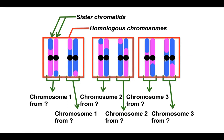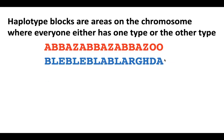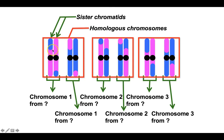You will also hear crossing over referred to as recombination. Look at how everything got shuffled. Haplotype blocks are areas on the chromosome where everyone either has one type or the other type. But because things have gotten shuffled, the purple and blue regions — which correspond to different DNA codes, different sets of instructions — are now getting all mixed together on the same chromosome.